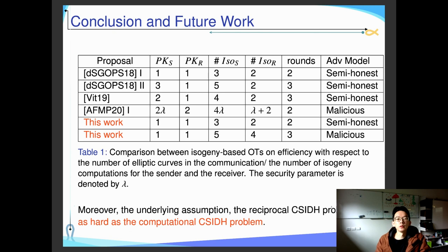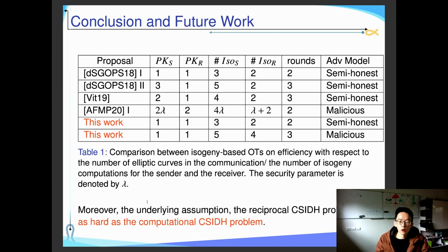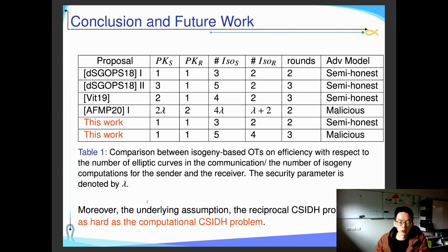In summary, we have presented an isogeny-based oblivious transfer that is UC-secure against malicious adversaries and takes only a constant number of isogeny computations — specifically, five isogeny computations for the sender and four for the receiver. Compared to the two previous works and one concurrent work, our underlying assumption is that the reciprocal CSIDH problem is as hard as the computational CSIDH problem, though keep in mind the reduction is not tight and requires calling the oracle several times.